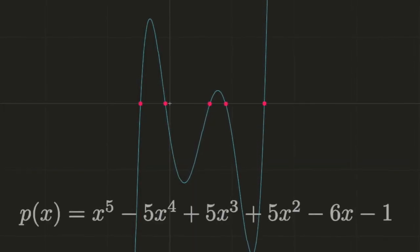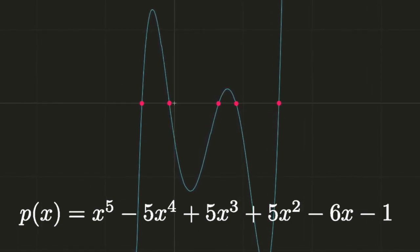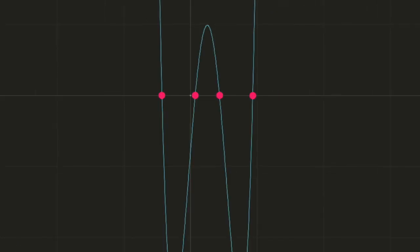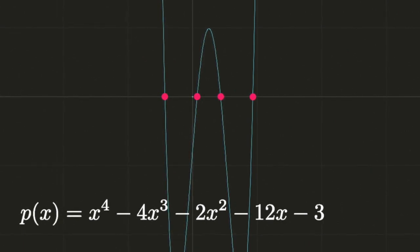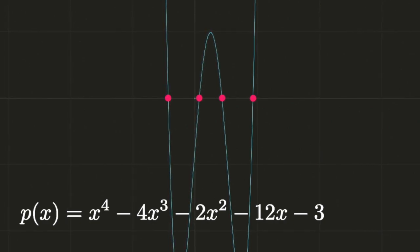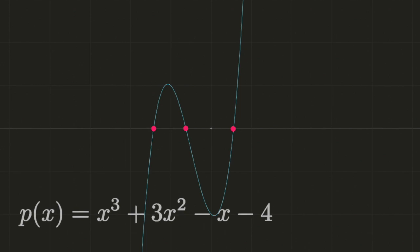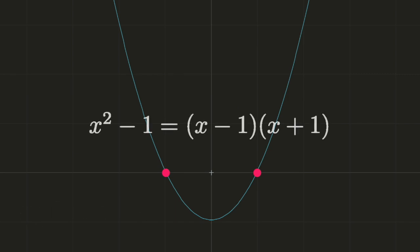Complex numbers first arose in the attempt to find the zeros of polynomials of one real variable. The zeros of a polynomial are the values of x for which it is equal to zero, and correspond geometrically to the places where its graph intersects the x-axis. Once the roots of a polynomial are known, it's easy to write out the factorization. For example, the polynomial x squared minus one can be factored as the product of x minus one and x plus one.